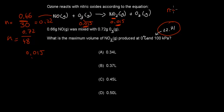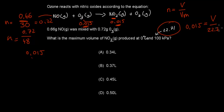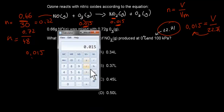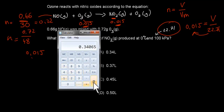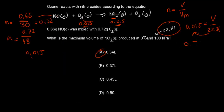Using n = V / molar volume, we rearrange to V = n × molar volume = 0.015 × 22.71 = 0.34 L. So A is correct — the maximum volume of nitrogen dioxide produced is 0.34 litres — and all other options are wrong.